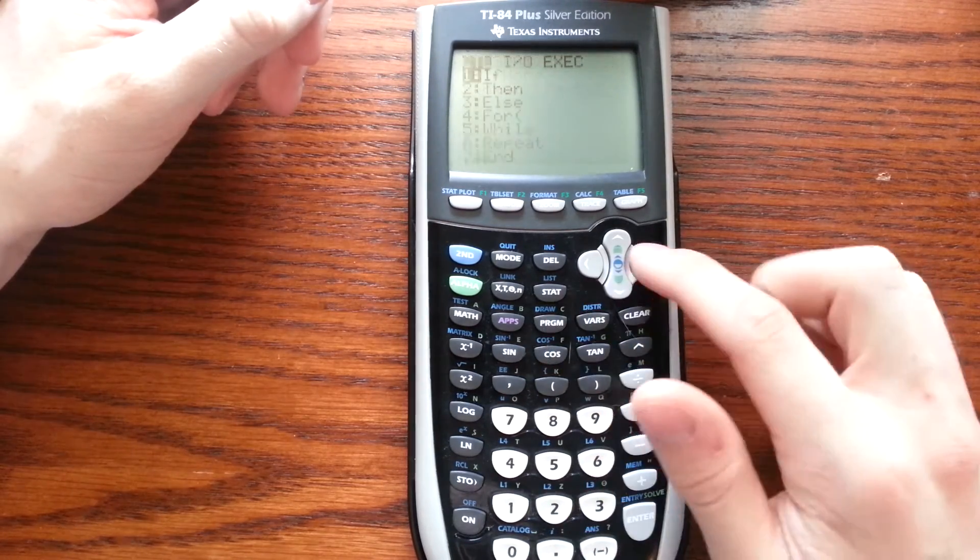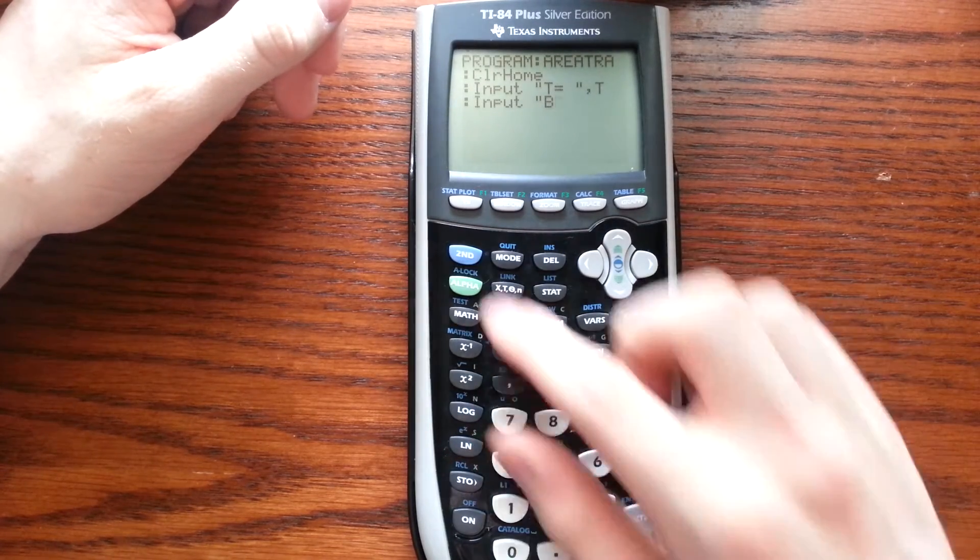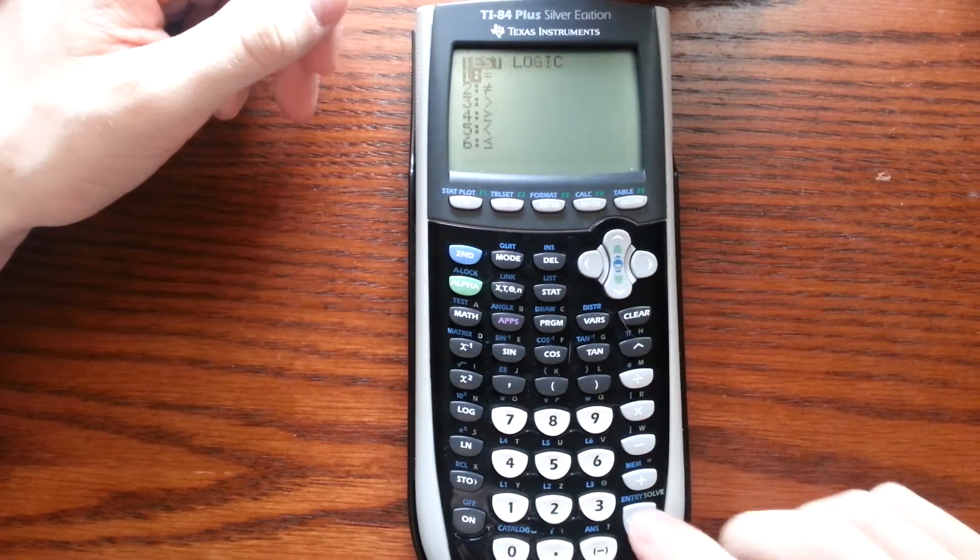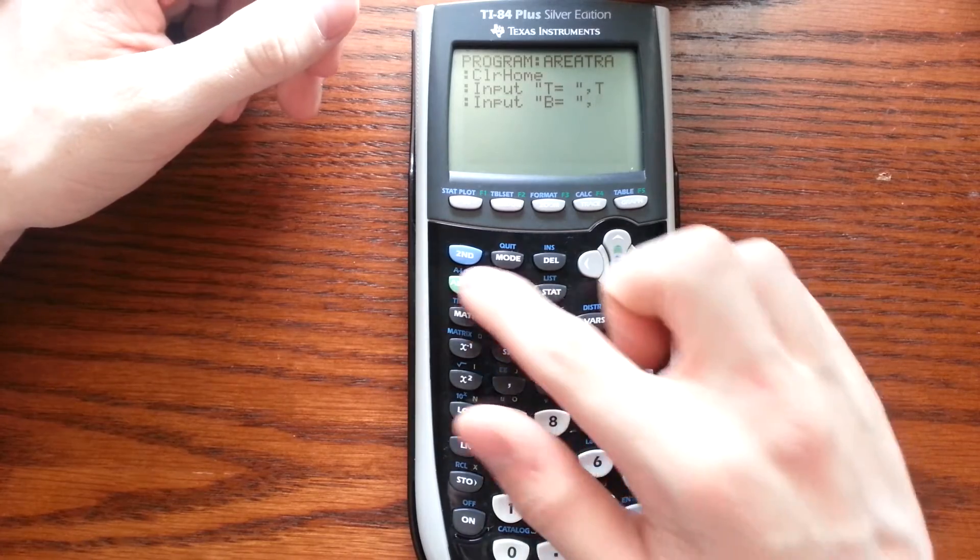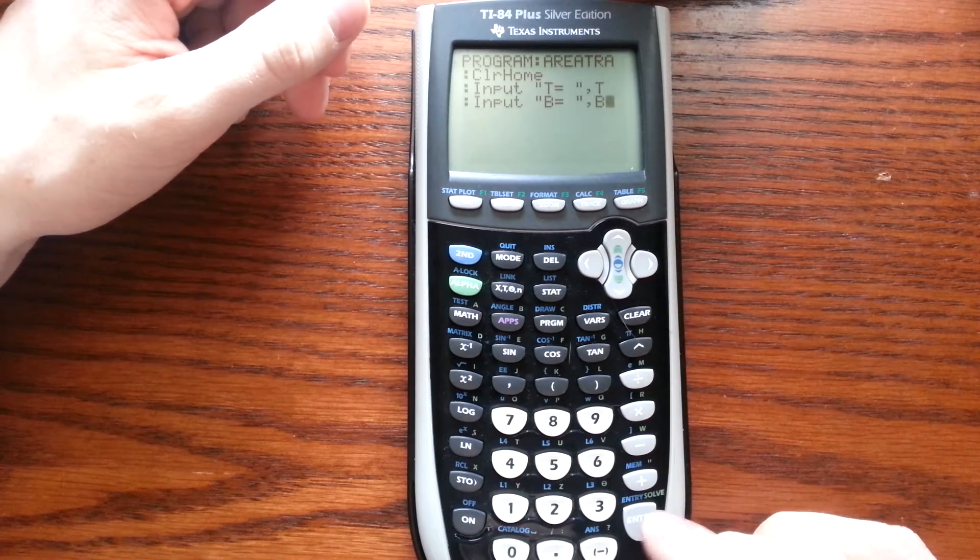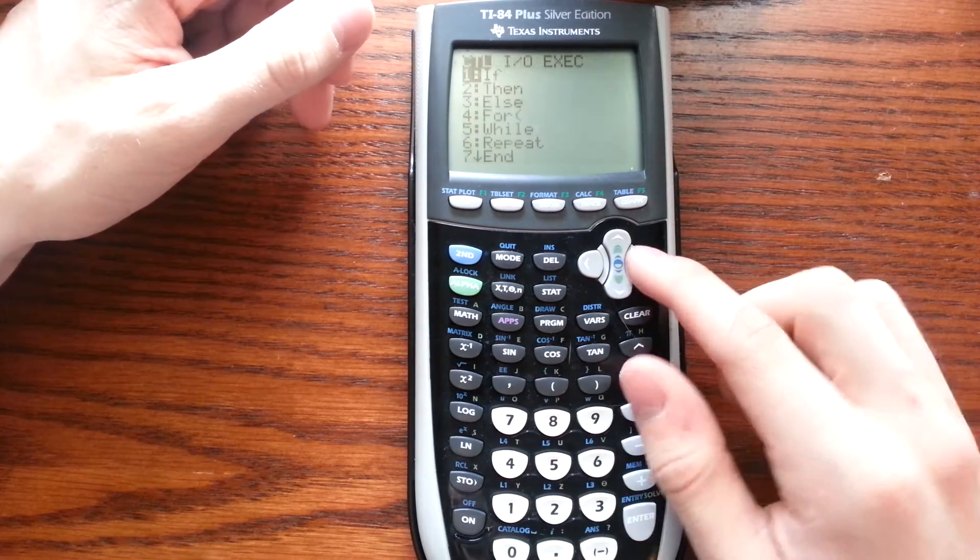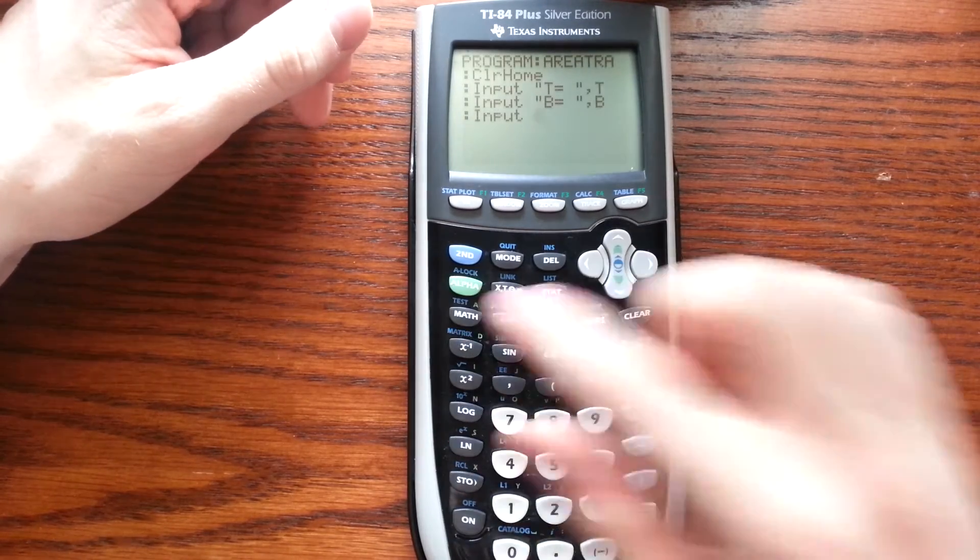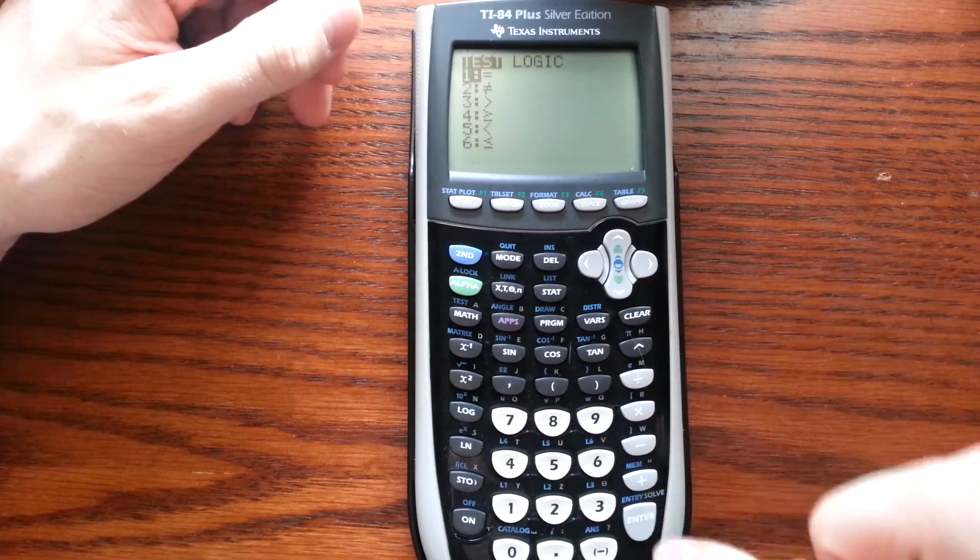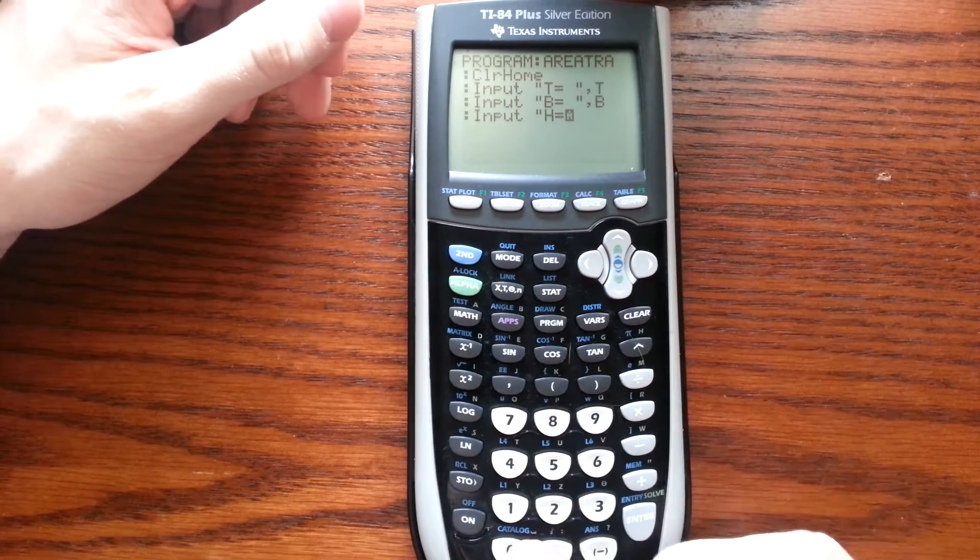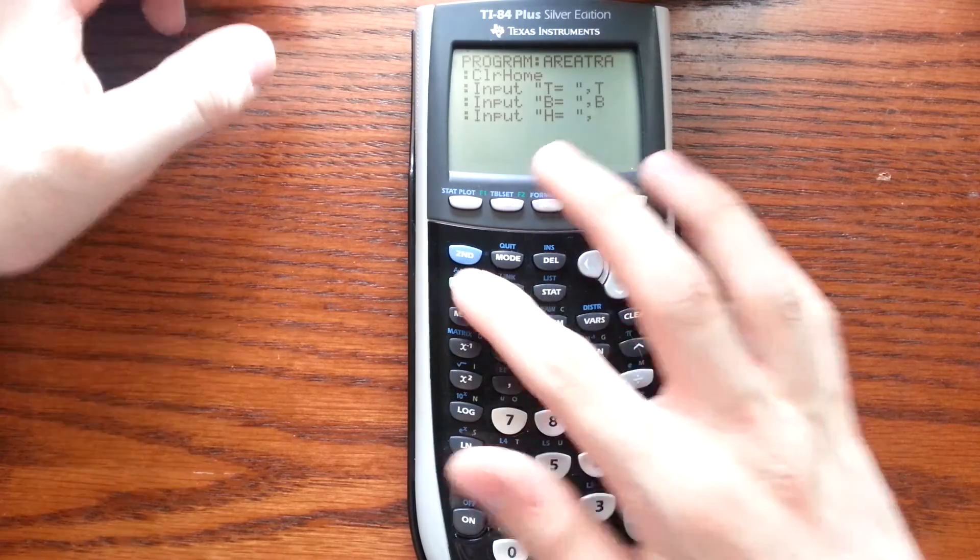So Input, Quotation, and we're going to do B, B second test equals space quotation comma B. From here, we're going to press Enter, and now we're doing the height. So we're going to do Input again, Quotation, Alpha, H, second test equals space quotation comma H.